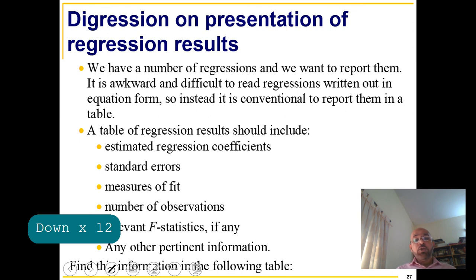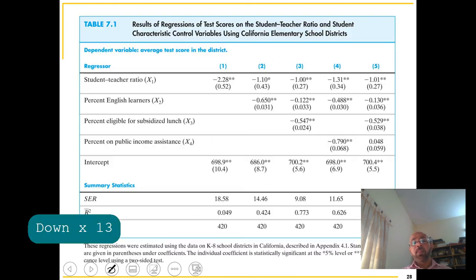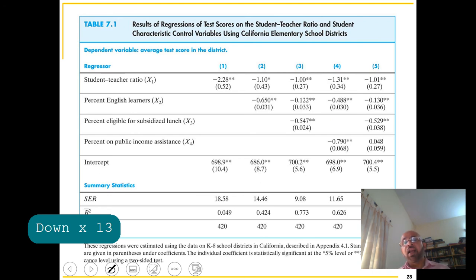What should we report in regression results? Coefficients, standard errors, measures of fit, standard error of regression, R-squared, number of observations, the relevant F-statistic, and any other useful information. That is the final summary of these four chapters — Chapters 4, 5, 6, and 7.